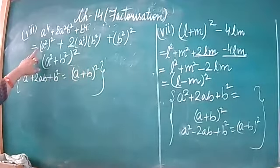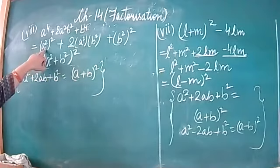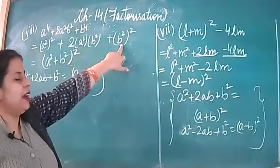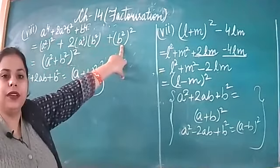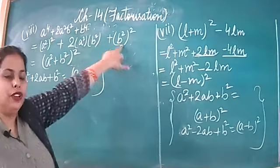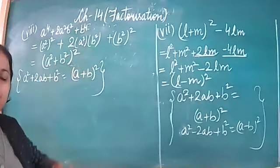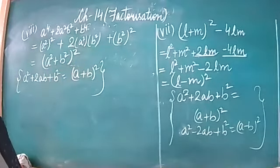Here our first term was a squared and second term was b squared, so the result is (a squared plus b squared) whole square.